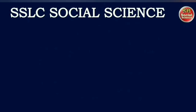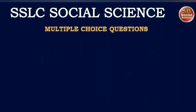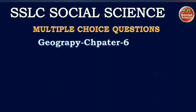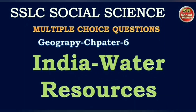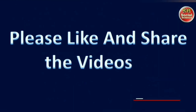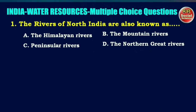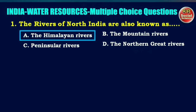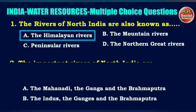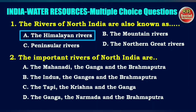Hello students, welcome back to our class. In this class we will discuss all the important multiple choice questions from Geography Chapter 6: India Water Resources. The first question is: the rivers of North India are also known as — options are the Himalayan rivers, the mountain rivers, peninsular rivers, or the northern great rivers. The right answer is option A: the Himalayan rivers.